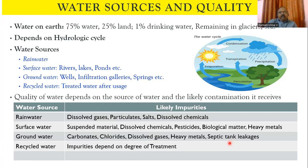Septic tank leakages are another problem, and more importantly, leachate coming from solid waste dumps goes into the subsoil and enters the groundwater, creating a possibility of groundwater contamination. The recycled water quality depends on the degree of treatment given to the water under the treatment systems.